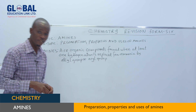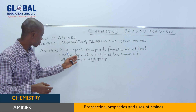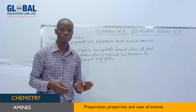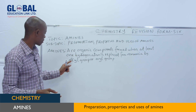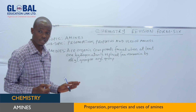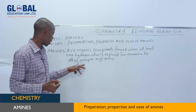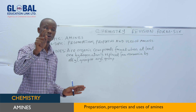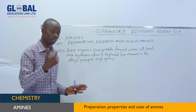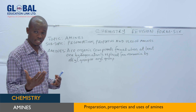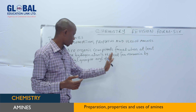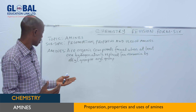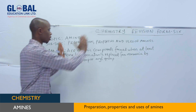At least one hydrogen atom is replaced from ammonia by an alkyl group or by an aryl group. When we talk about alkyl groups, these come from alkane and are formed when one hydrogen atom is removed from it. When we talk about aryl groups, these are molecules containing the benzene ring. So this is what amines are all about.